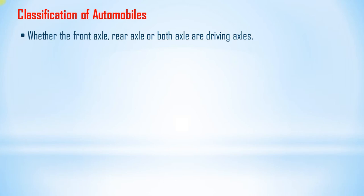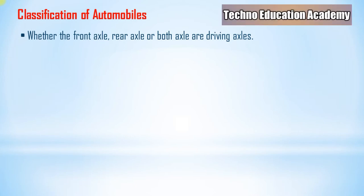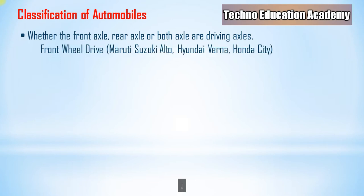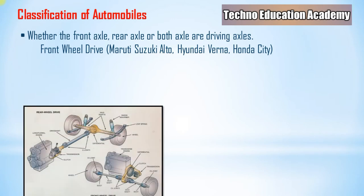The next classification considers whether the front axle, rear axle, or both axles are driving axles. A driving axle is one connected to the engine, receiving power directly — called a drive axle. An axle not receiving power is called a dead axle. In front-wheel drive, the engine is mounted at the front and the front axle receives power directly. Examples include Maruti Suzuki Alto, Hyundai Verna, and Honda City.